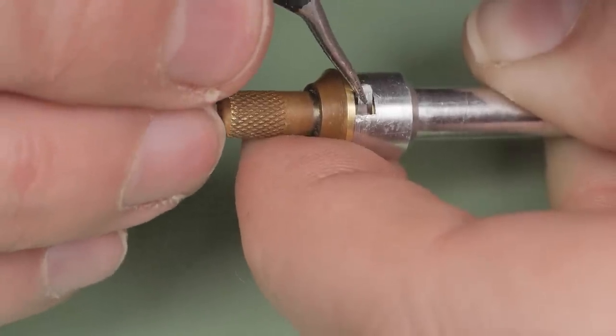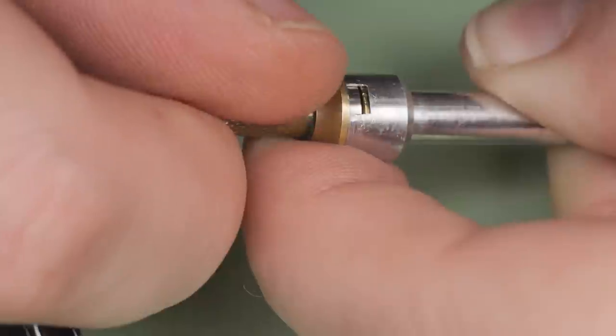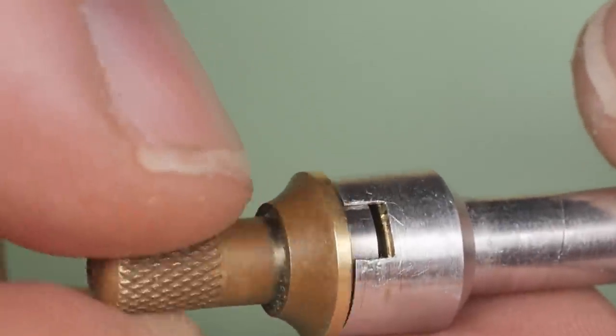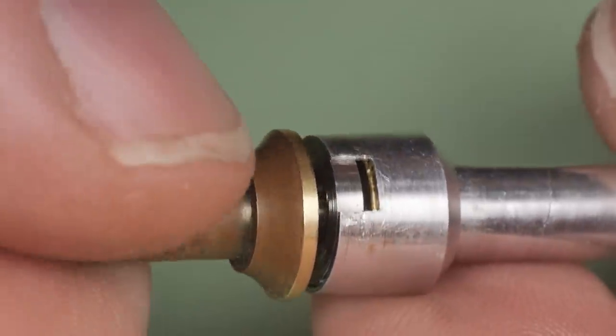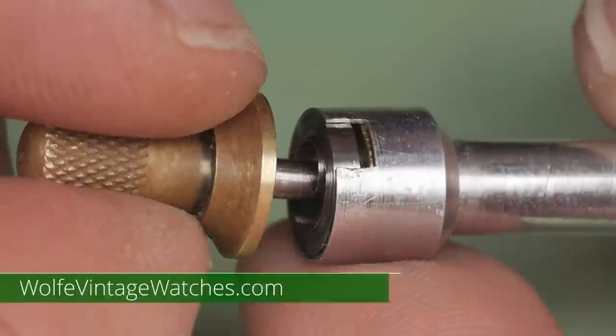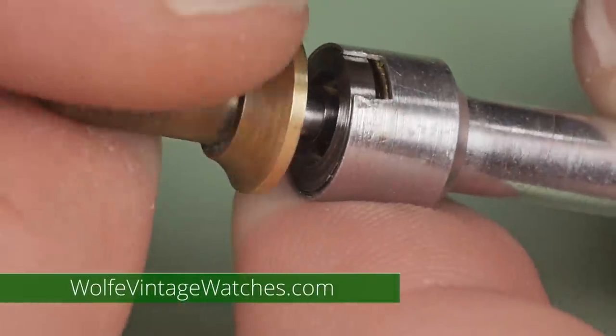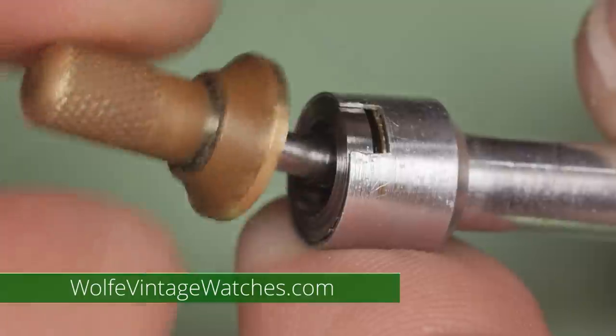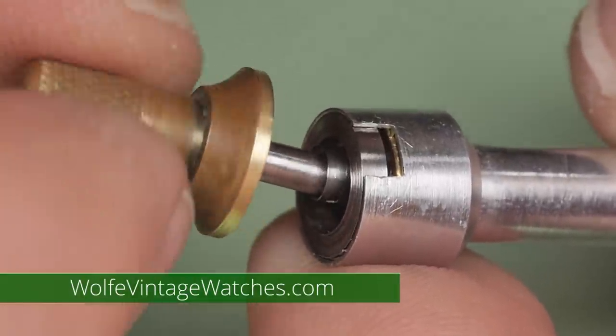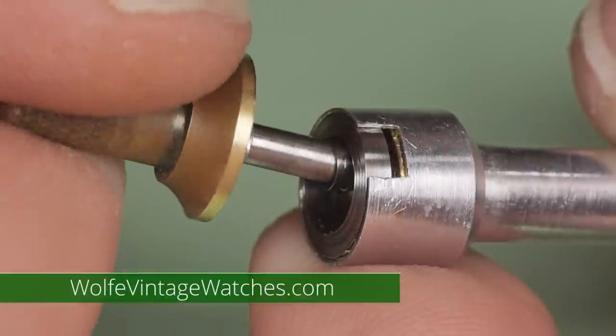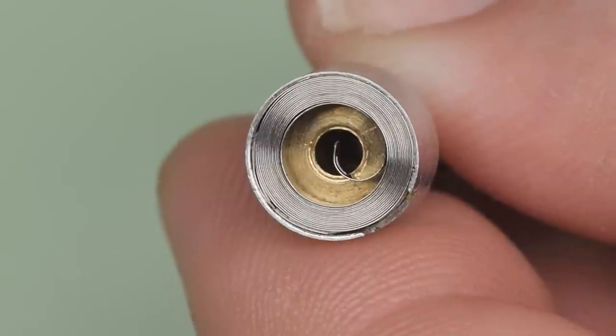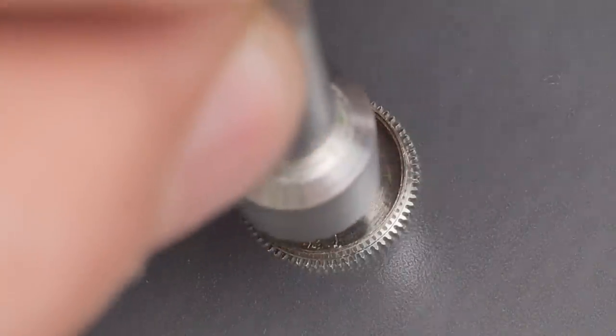When I get to the end of the mainspring, I need to work the last little bit into the handle around the T-brace. Then I can carefully take the winding arbor out. Here you can see the danger of pulling the winder out too quickly. This mainspring is grabbing onto the arbor and there is a risk that the whole thing flies out if I don't take my time.